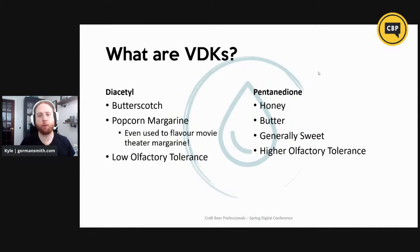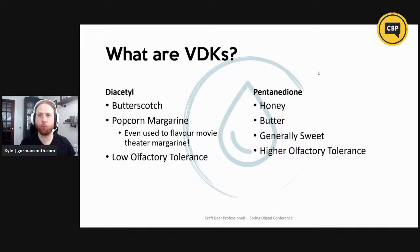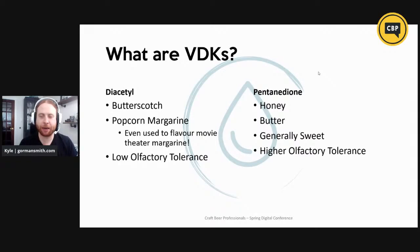VDKs are a family of flavors which have dozens of different compounds. The two main ones for brewers are diacetyl and pentanedione. Diacetyl tastes like butterscotch or popcorn margarine — and the reason why we taste it as popcorn margarine is because they actually use diacetyl to flavor the margarine at movie theaters. It has a very low olfactory tolerance, so we can taste it at fractions of a part per million. Pentanedione, on the other hand, is more like honey and butter and is generally sweet, but we don't taste it nearly at the same rates as diacetyl. So for the most part, we want to reduce diacetyl formation wherever possible.